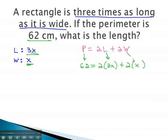By replacing these key parts in the formula, we end up with an equation we can quickly solve. Multiplying out on the right side gives us 62 equals 6x plus 2x. Combining like terms will give us 62 equals 8x.